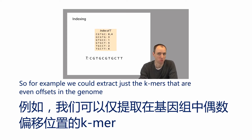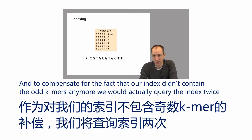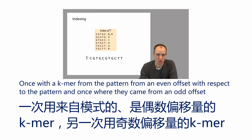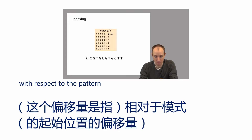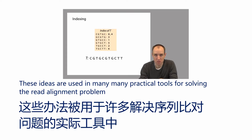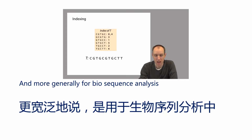For example, we could extract just the K-mers that are at even offsets in the genome. To compensate for the fact that our index didn't contain the odd K-mers anymore, we would query the index twice: once with a K-mer from an even offset with respect to the pattern, and once with a K-mer from an odd offset. These ideas are used in many practical tools for solving the read alignment problem and more generally for biosequence analysis.